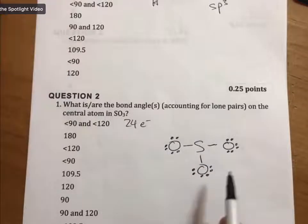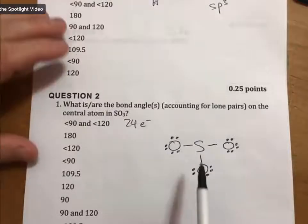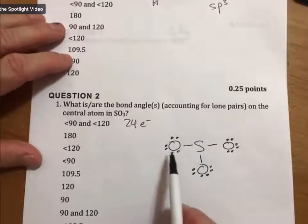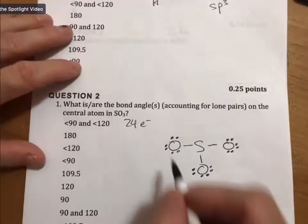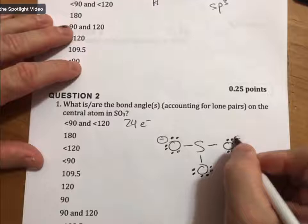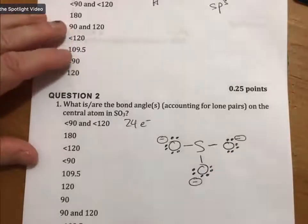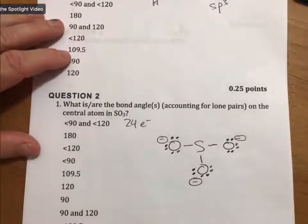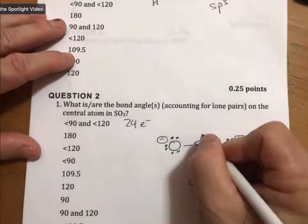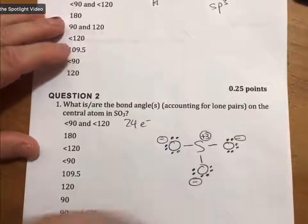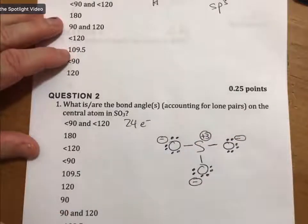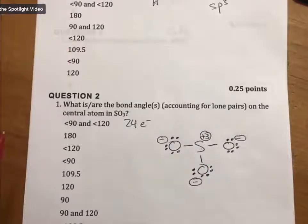What are our tools in our tool bag? We can do formal charge analysis. If we do a formal charge analysis, we would see that each of these oxygens is minus one and the sulfur is plus three, which is ridiculously high.